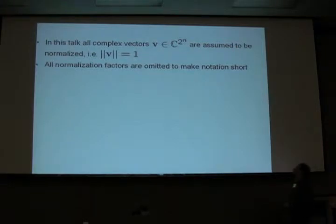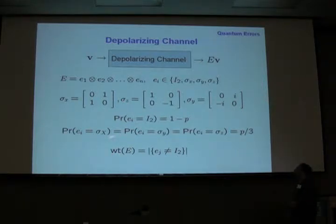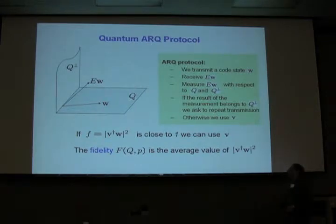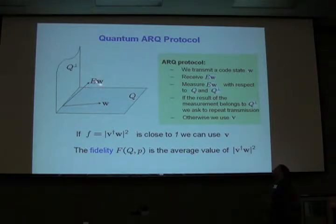I would like to investigate this type of probability for the quantum case, so I switch to the quantum scenario. In all the talk, I assume that all vectors have unit norm and I will omit all normalization factors. Instead of the binary symmetric channel, we use the depolarizing channel. The weight of an error operator in the depolarizing channel is the number of factors in the tensor product that are not the identity. Now for quantum ARQ protocol: we have a quantum code Q, and we assume that we transmit a randomly and uniformly chosen state W from this code Q. The depolarizing channel corrupts the transmitted state and we receive the state E times W.